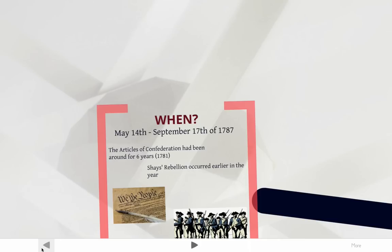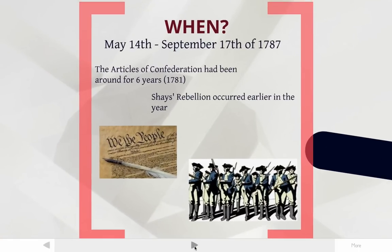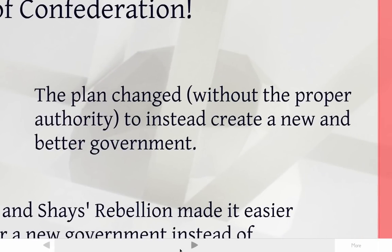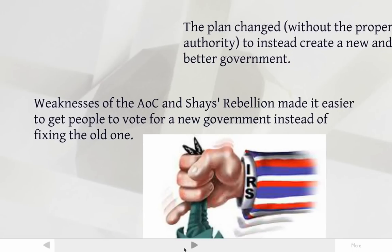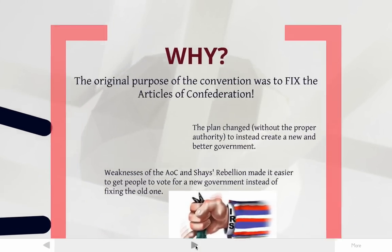Shays' Rebellion was well on the minds of the people at the convention. The original purpose of this convention was not to write a new government — which is what they ended up doing — but just to fix the existing government, the Articles of Confederation. But the plan changed. When they started talking about how to fix the government, they realized the Articles of Confederation were so bad they could not be fixed, and they actually needed to create a new government. Because the Articles were so bad and Shays' Rebellion had just happened, people were pretty much all on board with changing the government rather than fixing it. One thing they were going to do was allow the government to tax, because that was one of the weaknesses of the Articles of Confederation.